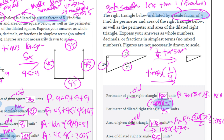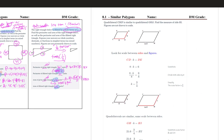To recap: for perimeter, multiply by the scale factor directly — 36 times 5 gave us 180. For area, multiply by the scale factor squared — 81 times 5 squared gave us 2025. These two videos together cover all the notes, and hopefully breaking it up makes it easier to follow.